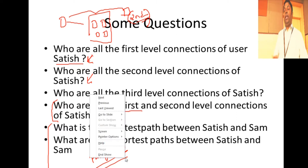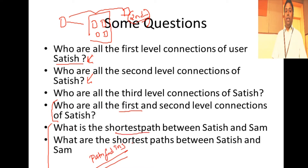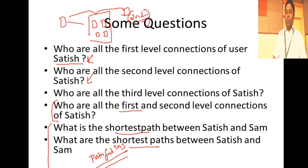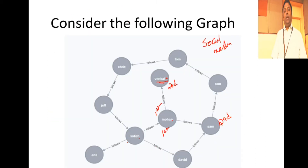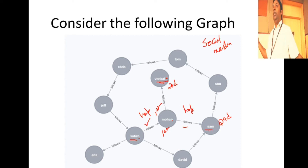We'll look at finding the shortest path between any two given nodes, and finding all the shortest paths between any two given nodes. When we talk about shortest paths here, we're talking about the number of hops. Say Satish follows Mohan and Mohan follows Sam — the shortest path between Satish and Sam is the minimum number of hops connecting them. Satish to Mohan is one hop, and Mohan to Sam is the second hop. You measure the number of hops and identify the shortest path.